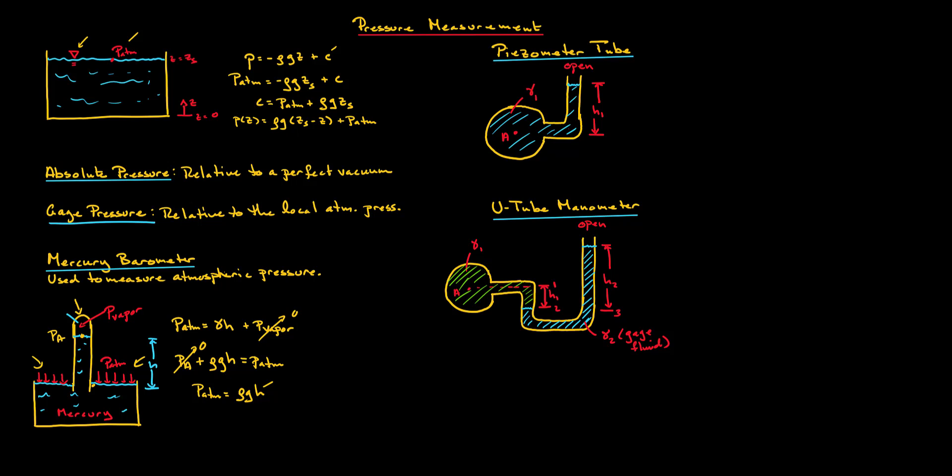This is how we measure atmospheric pressure. Now let's talk about measuring pressure in engineered devices. This is usually accomplished using liquid columns arranged in vertical or inclined tubes — devices called manometers. The simplest type is the piezometer tube: an open vertical tube attached to a container in which the internal pressure measurement is desired.